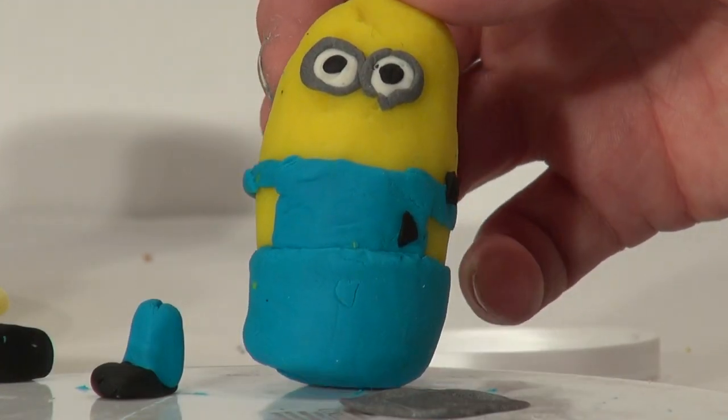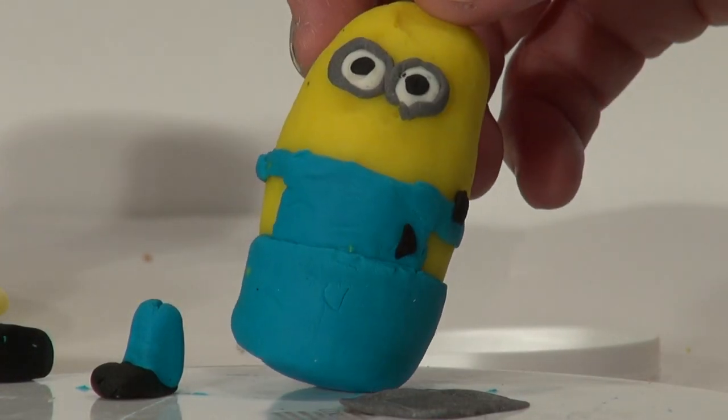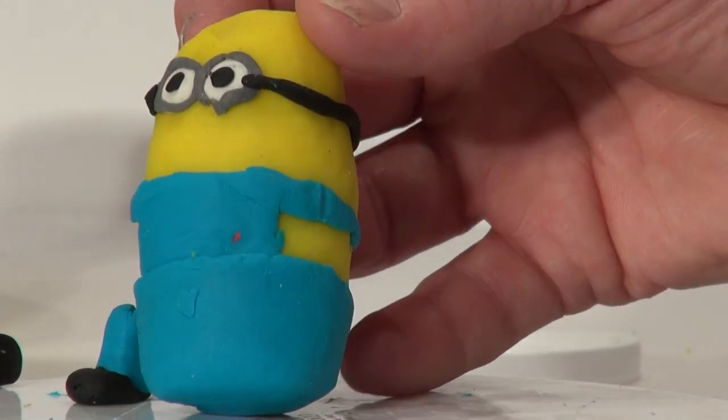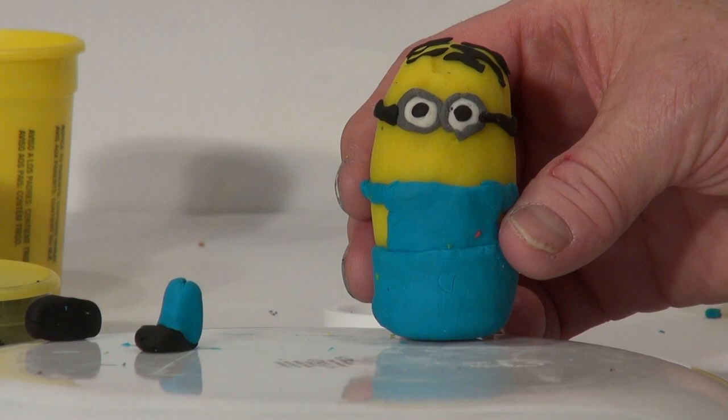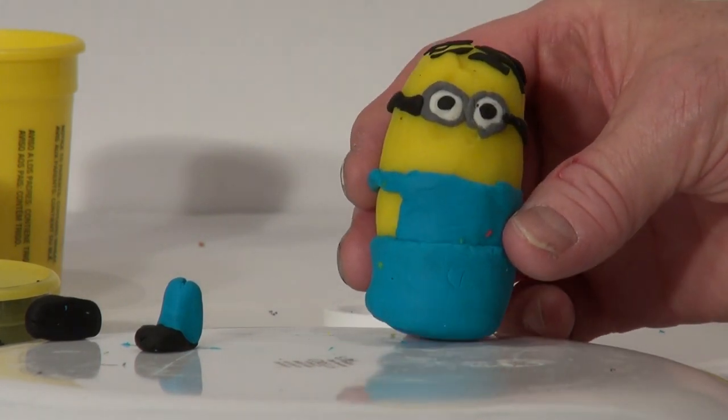Now we'll add on those distinctive glasses. Now we can add a black strap that holds the glasses on. It goes right around his head. We took a little bit of black Play-Doh and rolled it flat like a snake, and then put it on his head. But first, I added some hair to this minion. Minion Phil has a bit of hair.